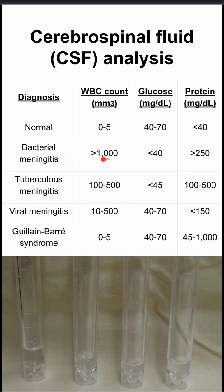In bacterial meningitis, you have a strong immune reaction, so there are a lot of white blood cells — over 1,000 in your sample. Bacteria eat glucose; they love glucose, and that's how they grow. So your glucose levels are going to be low, below 40. And bacteria also produce a lot of proteins, so you'll have high proteins as well.